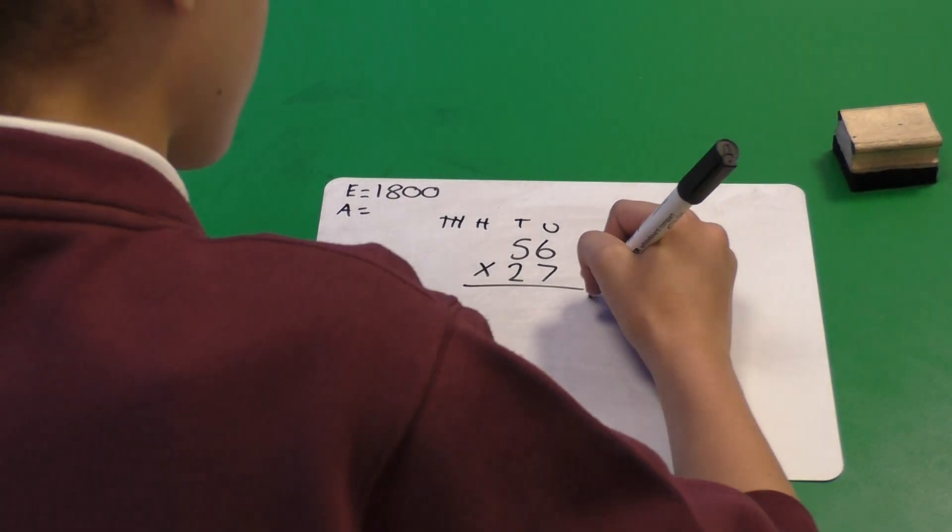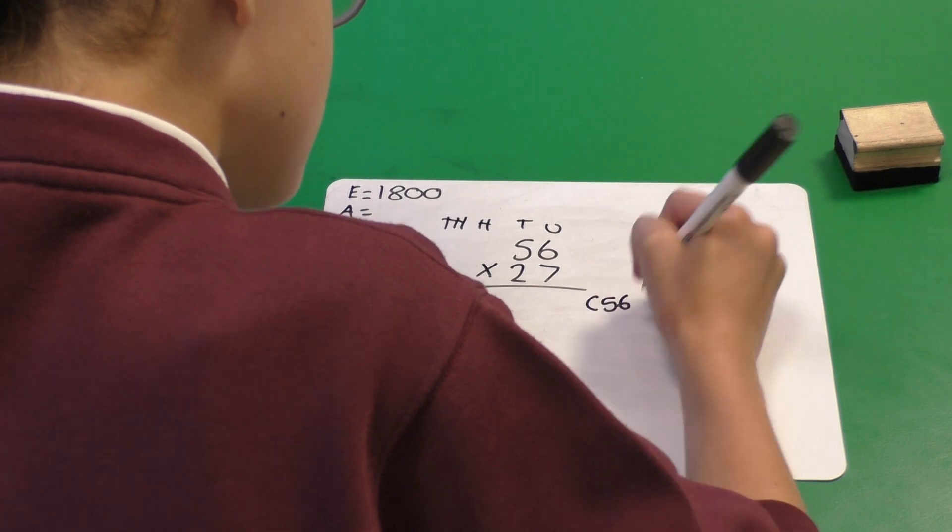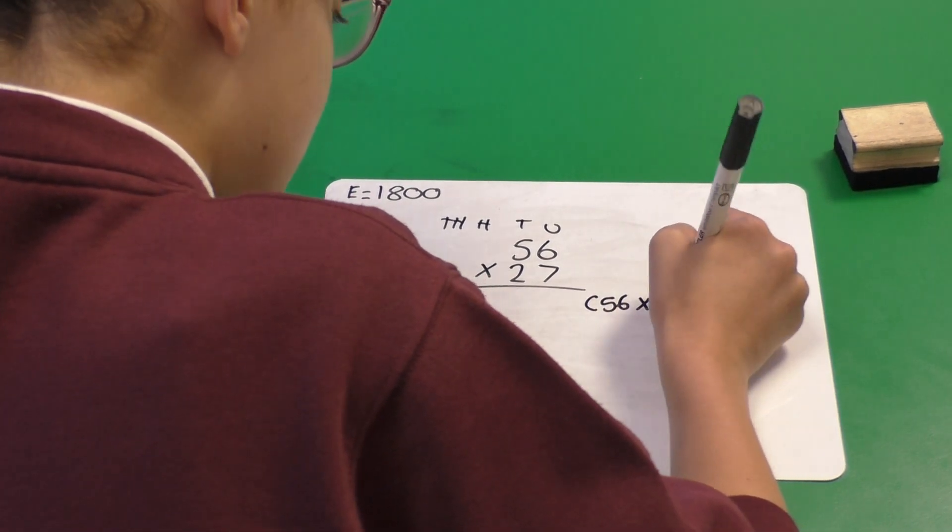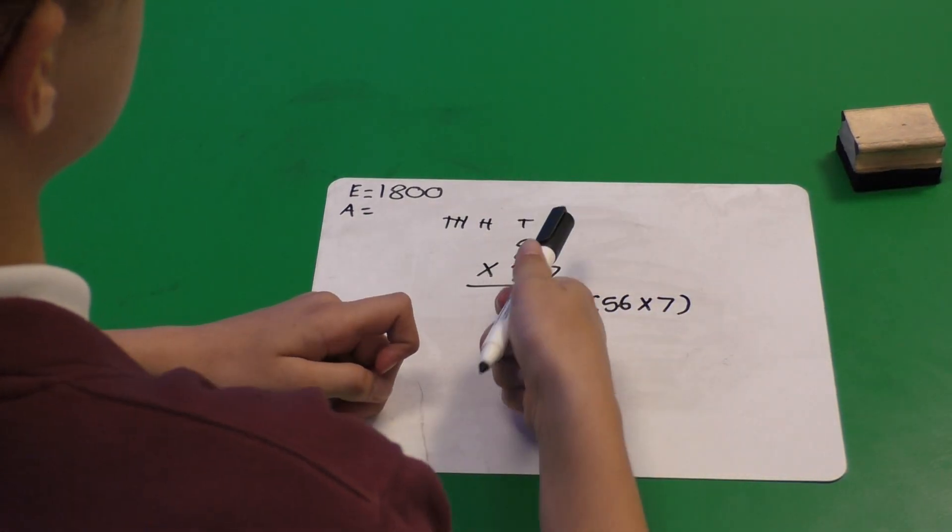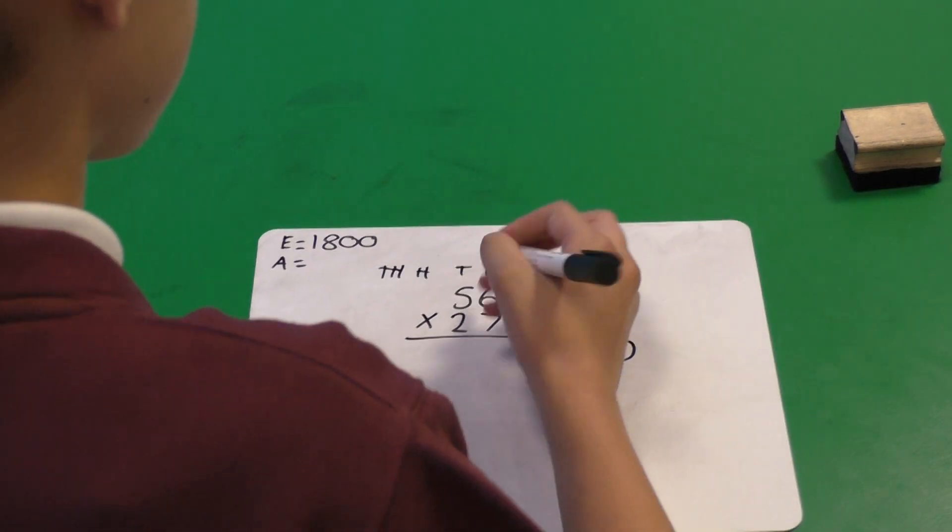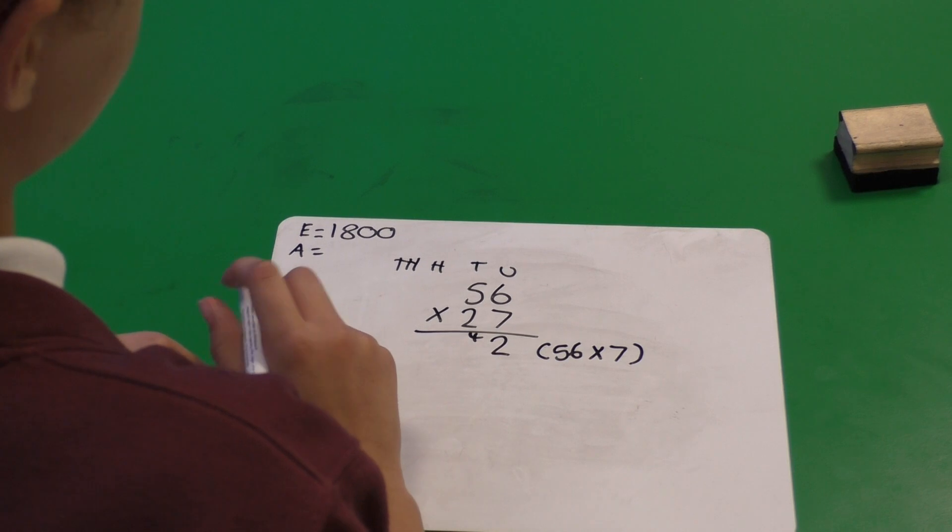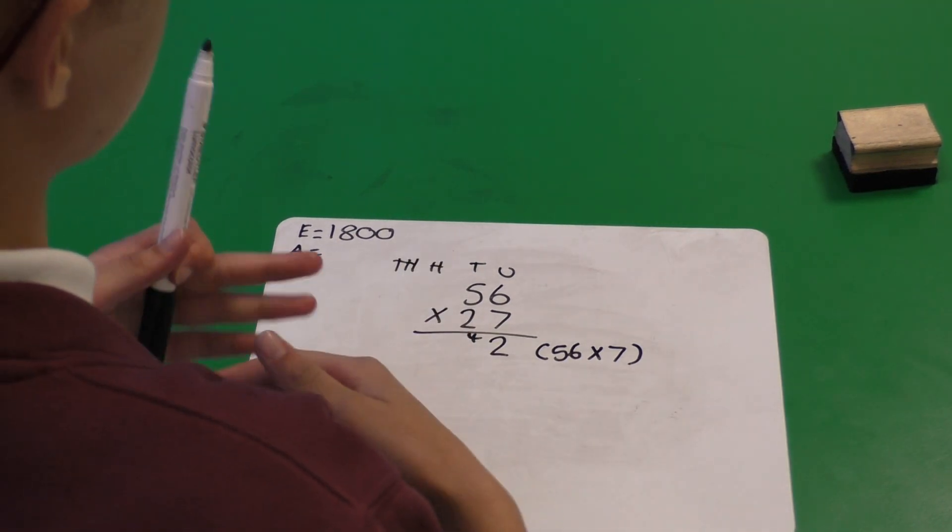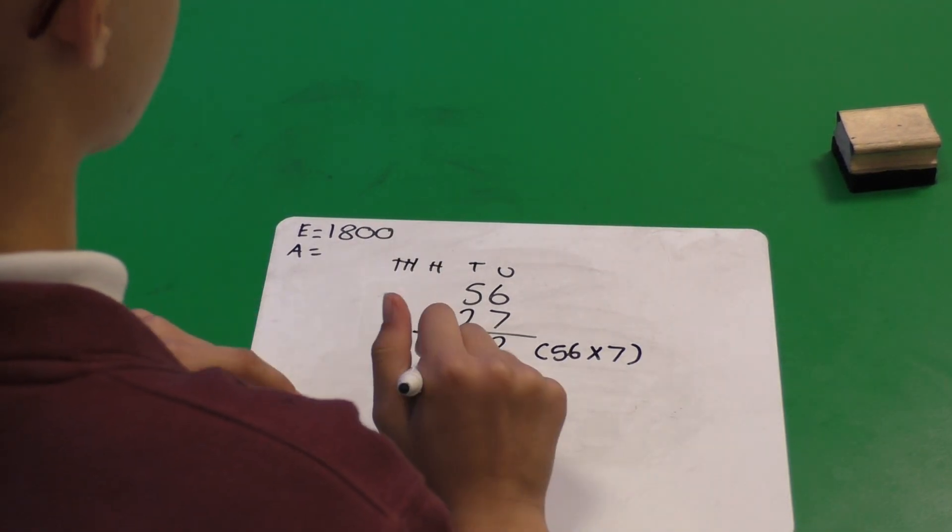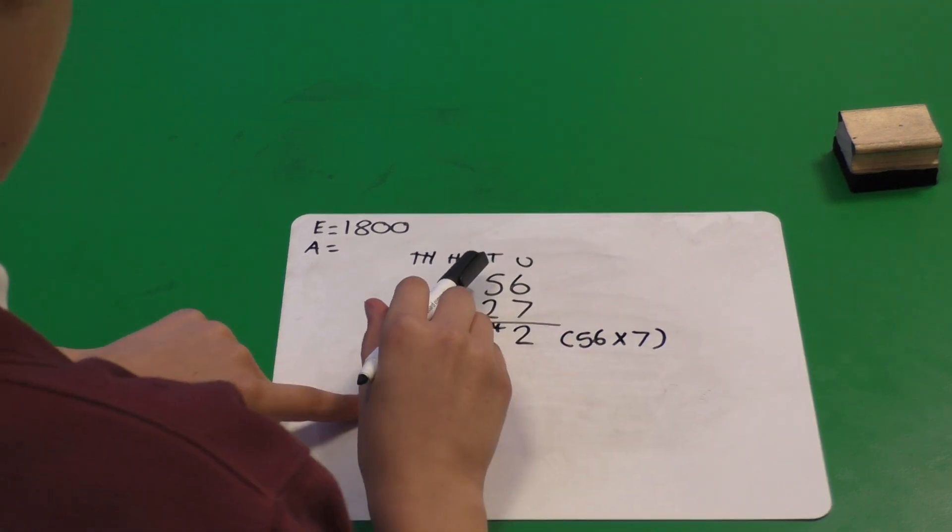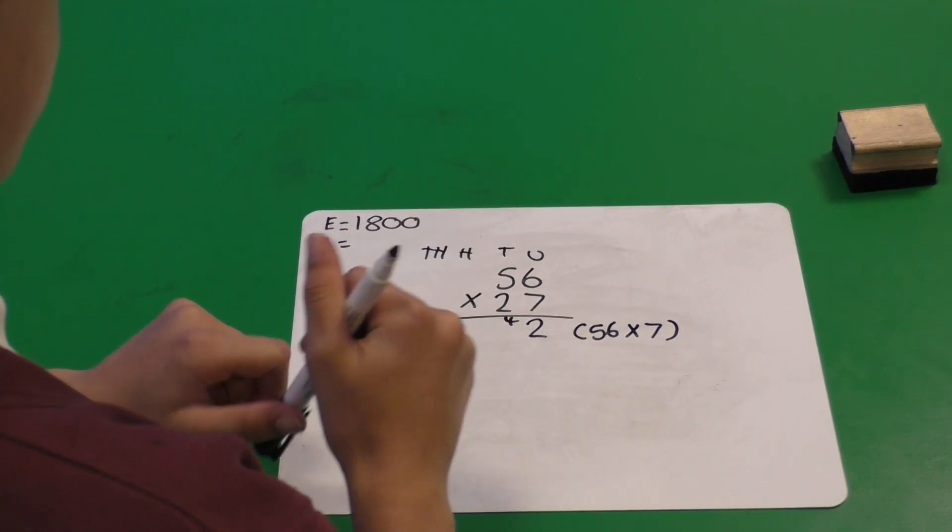The first calculation we're going to do is 56 multiplied by 7. So 6 multiplied by 7 is 42. Why is the 4 smaller than the 2? So we've done something called exchanging, where we've exchanged the 4 from the units into the tens column, therefore making it 40.